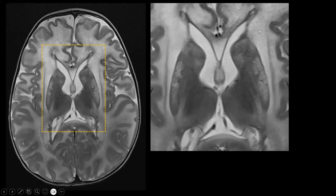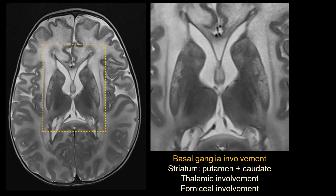Looking at the deep nuclei: there are diffuse patchy signal abnormalities involving the basal ganglia — the caudate nucleus and the lentiform nucleus — and also to a lesser extent the thalamus on both sides. The signal in the corpus callosum is also abnormal; we would expect a myelinated corpus callosum at this age especially posteriorly, but the signal is not that of fully myelinated white matter. There are also signal abnormalities in the fornix, which also looks a bit swollen. To summarize: diffuse basal ganglia involvement especially of the striatum — putamen and caudate — somewhat less of the globus pallidus — plus thalamic involvement and involvement of the corpus callosum and both fornices.